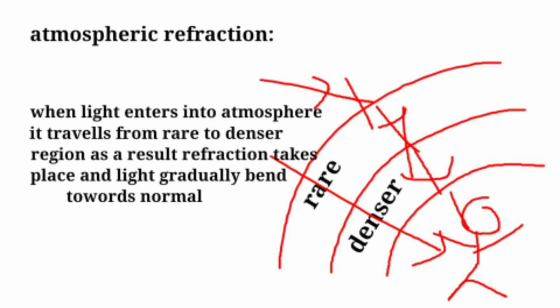Now we take atmospheric refraction. When light enters into the atmosphere, it has to travel from rare to denser medium. As a result, refraction takes place and light gradually bends toward the normal, as shown in the diagram.